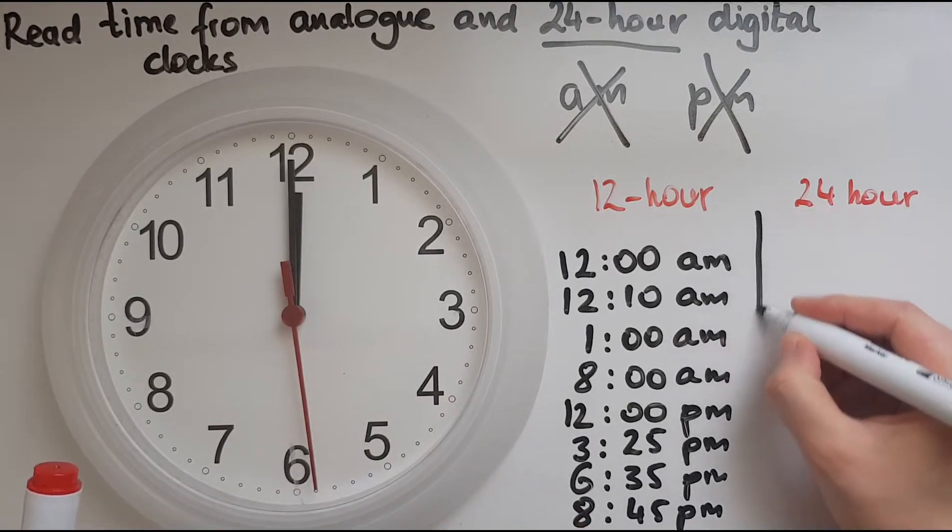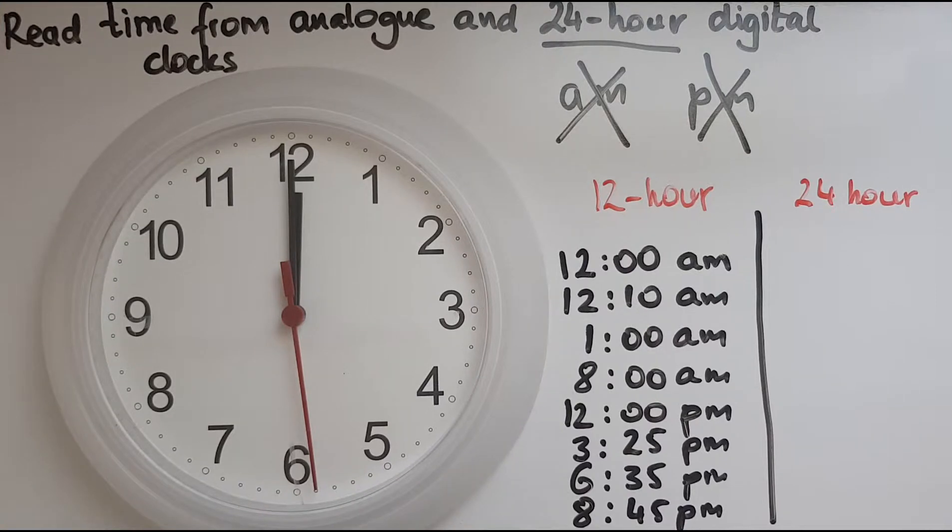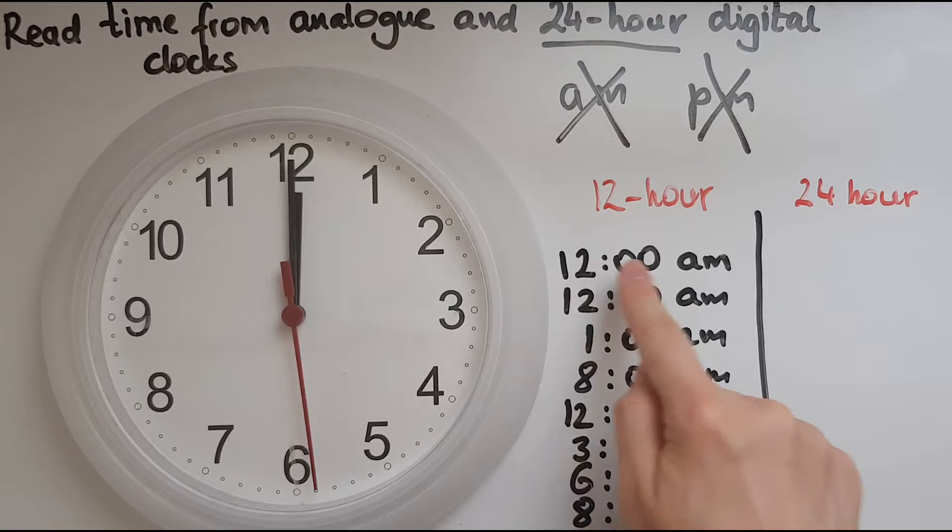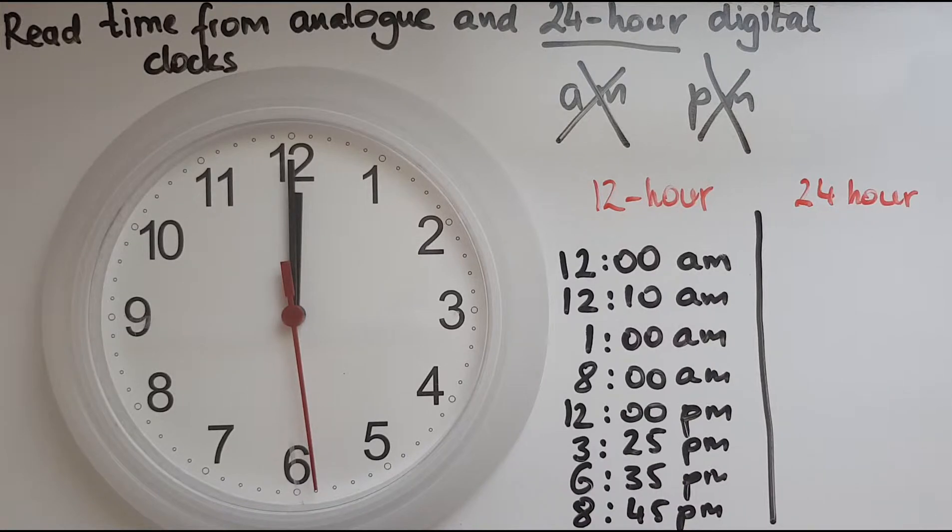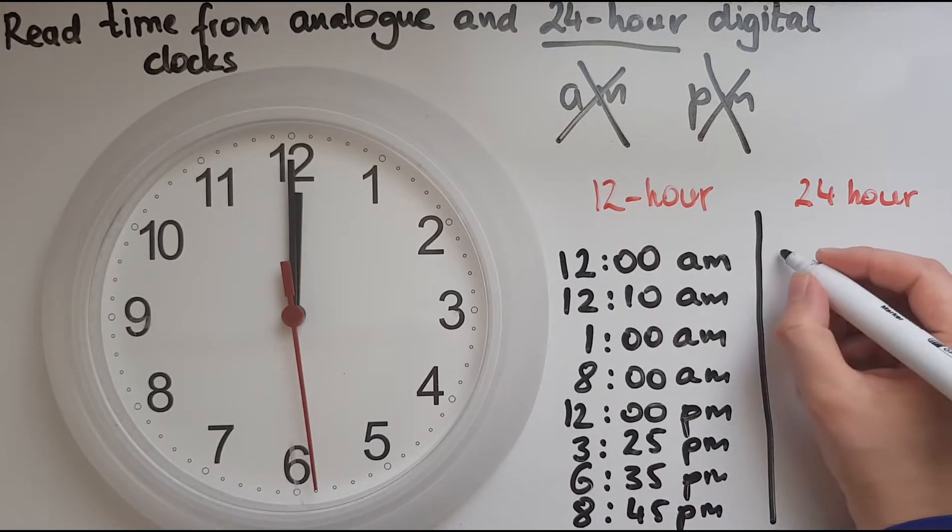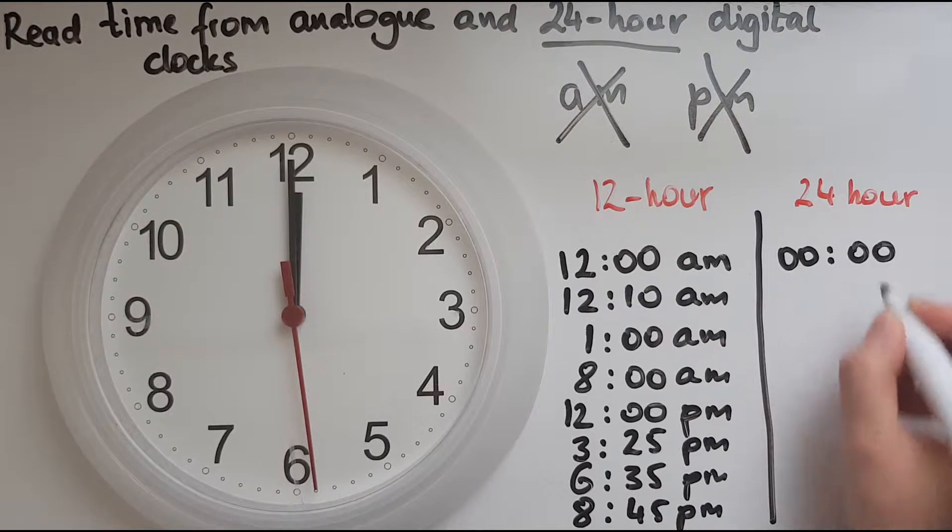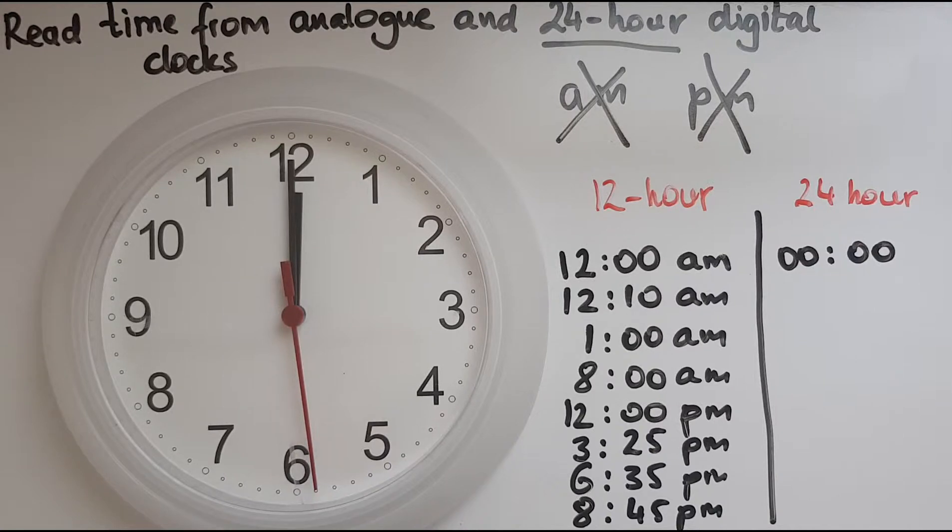And here I'll do the 24-hour format which doesn't have a.m. or p.m. We just increase the numbers. So 12 at midnight is shown like this in the 12-hour format. In the 24-hour format it's shown as 00:00. So that's the start of the day, of the new day midnight, and that is what it means. I don't need a.m. or p.m. as I said before.